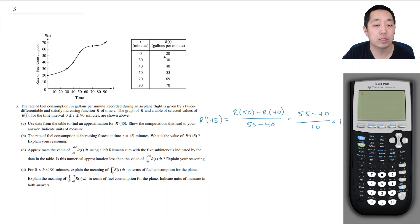Now what are the units? Well, this is gallons per minute and this is minutes. So that's gallons per minute squared, or you could say gallons per minute per minute if you wanted to.